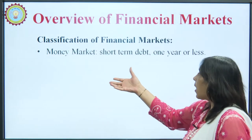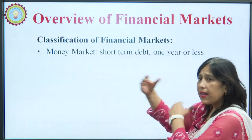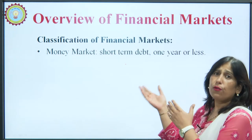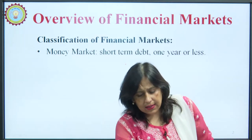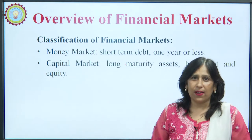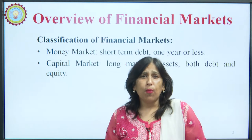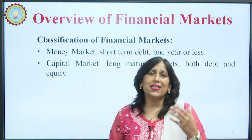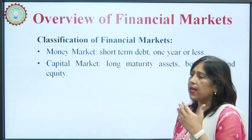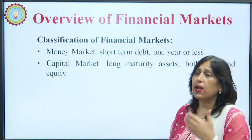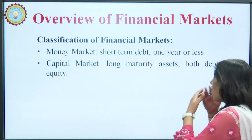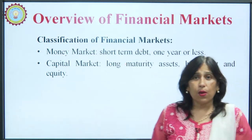The money market is a market where funds or investment are there for the short term, usually for a period of one year or less. The second segment of the financial market is the capital market. Capital market is very popular — we usually know the secondary market segment of the capital market as the equity market, secondary market, or share market. It has a long maturity and includes both debt and equity.